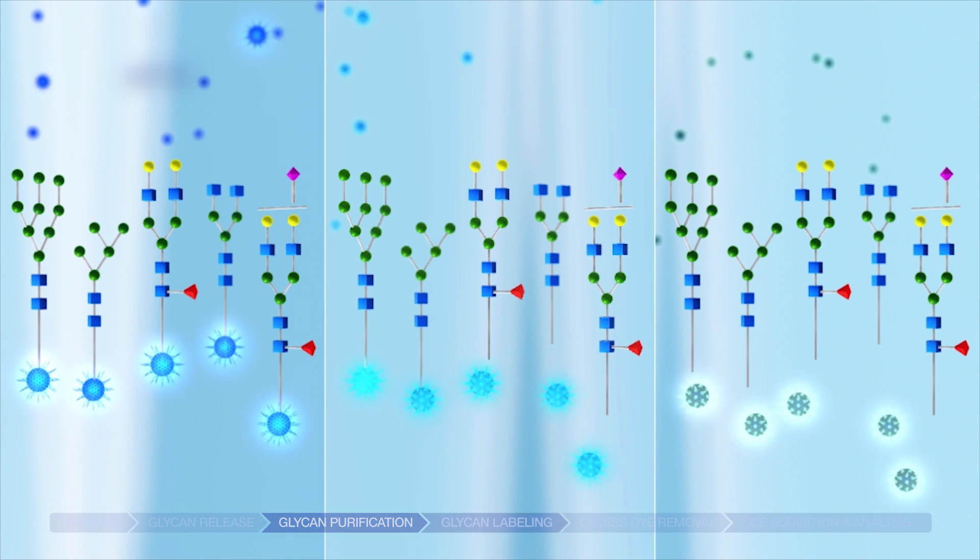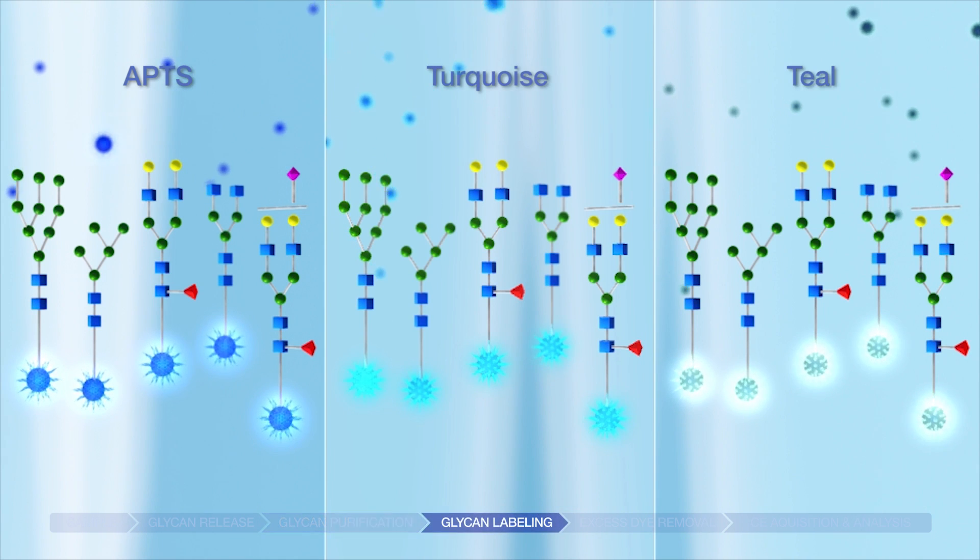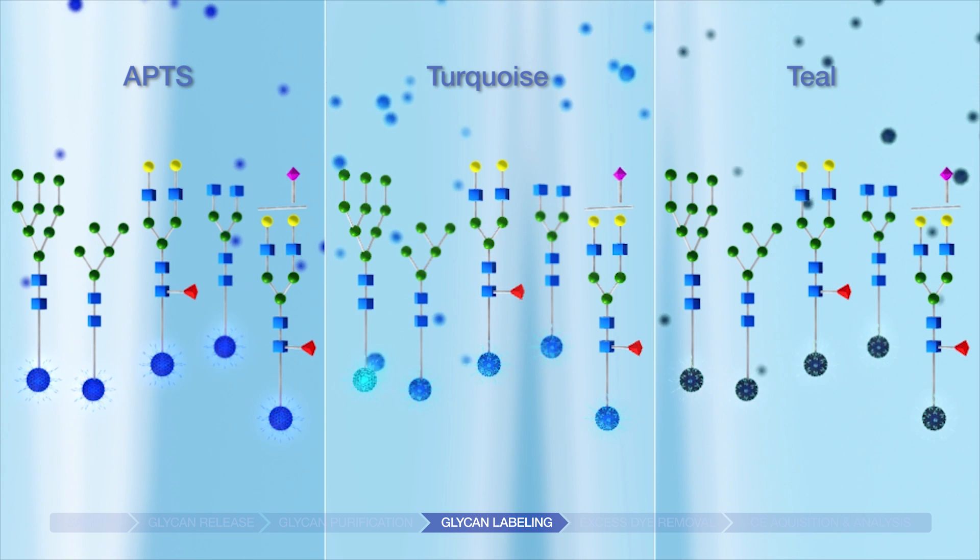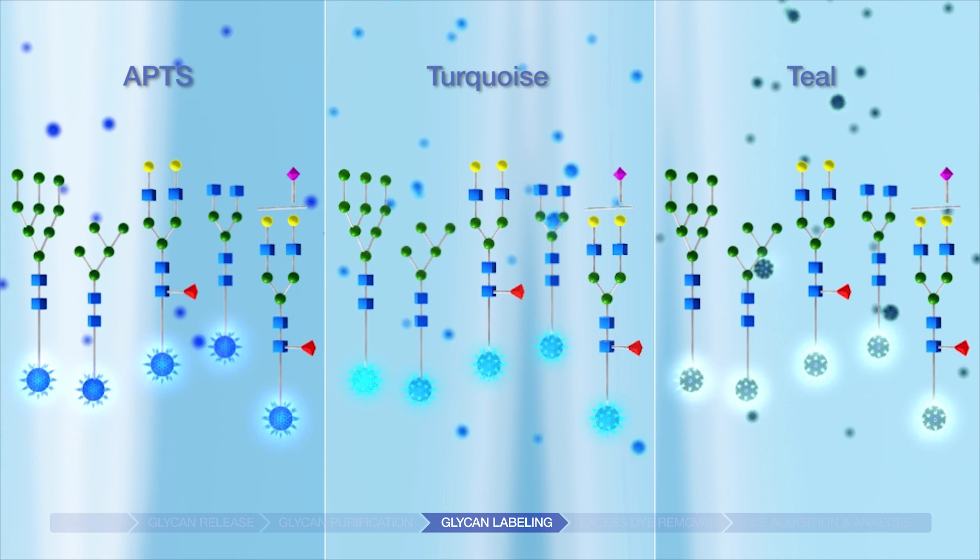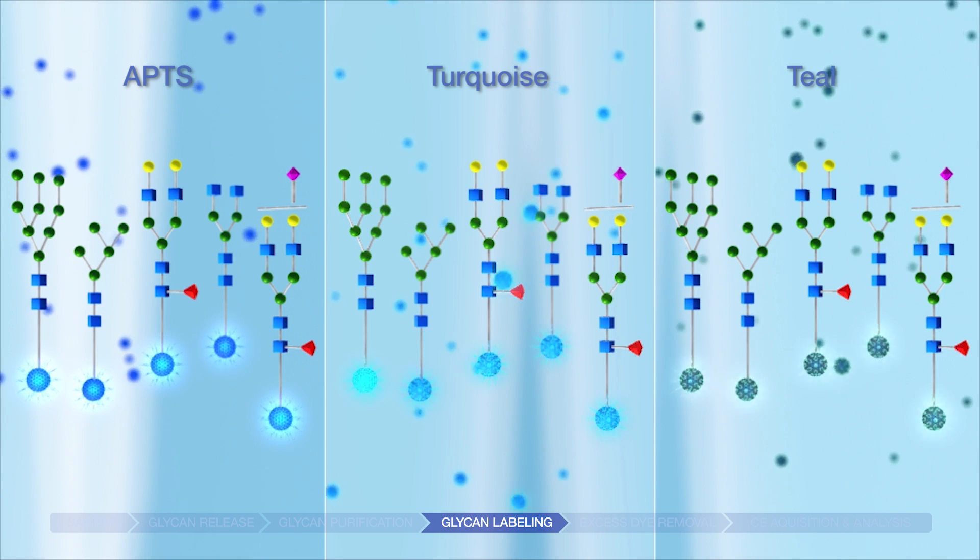Dye labeling reagents, APTS, turquoise, or teal are added and bind to the glycans. No laborious vacuum centrifugation steps or toxic chemicals such as sodium cyanoborohydride are necessary.